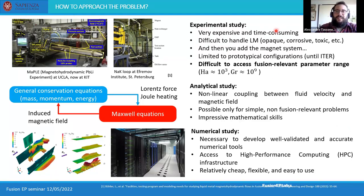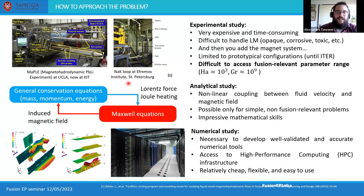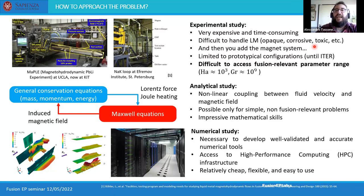Experimental studies are the basis of scientific advancement, but characterizing MHD flows requires dealing with liquid metals, which is very difficult. Liquid metals can be corrosive — think of lead — toxic — think of mercury — and outright explosive, especially alloys like sodium-potassium or liquid lithium. It's even more difficult and expensive when you consider that lead-lithium must be kept at temperatures close to 300–400 degrees Celsius, and you also require a very expensive magnet system.